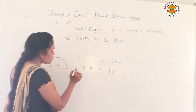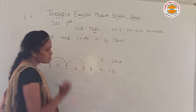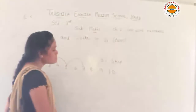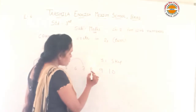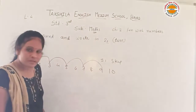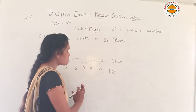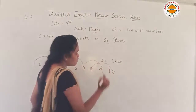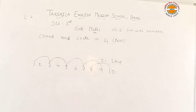Five and six, we will skip. Then we will count seven. Seven, eight — seven numbers skip. Then we will skip seven and eight — two numbers go. Then we will skip eight. Eight, nine. Now I will skip the line.